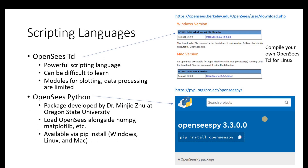I mentioned TCL already. That's one of the two scripting languages you can use with OpenSees. TCL is a very powerful scripting language but it can be difficult to learn, and there are limited modules for plotting and post-processing results. You can obtain the Windows and Mac versions of OpenSees-Tcl from OpenSees.berkeley.edu. The latest version is 3.3.0. For Linux, you'll need to compile your own TCL version on whatever flavor of Linux you have.